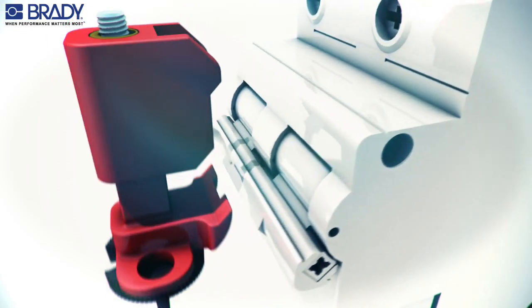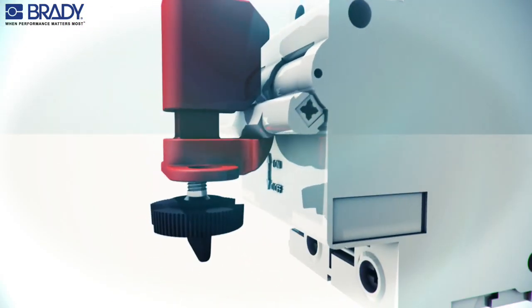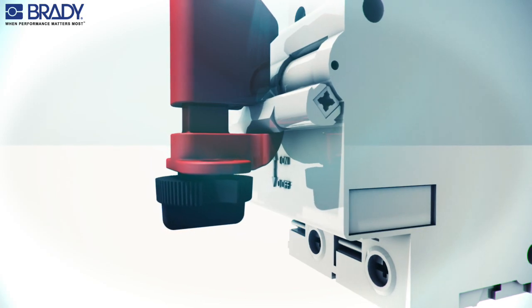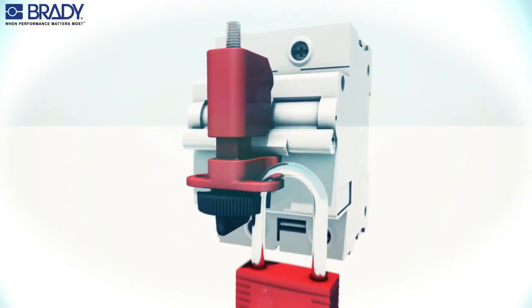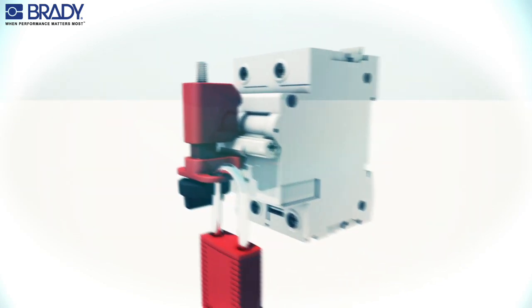Put the metal clip under the tie bar and between the poles. Rotate the thumb wheel clockwise to secure the lockout device to the circuit breaker, then insert the padlock through the hole to secure the device in the locked position.